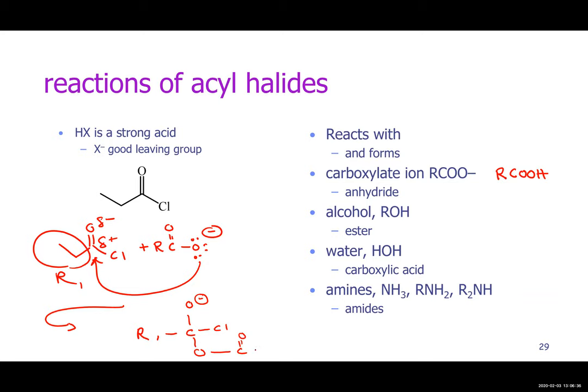You still have two lone pairs on the oxygen. This is the tetrahedral intermediate. Then it's just a matter of what's the better leaving group. When this collapses, it kicks out the chloride ion. The tetrahedral intermediate collapses because it has more strain than when it's flat — the groups are closer together, so we have steric strain.